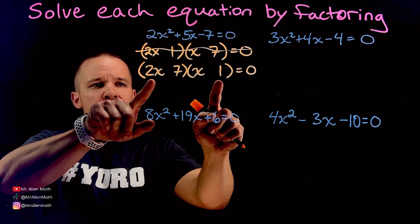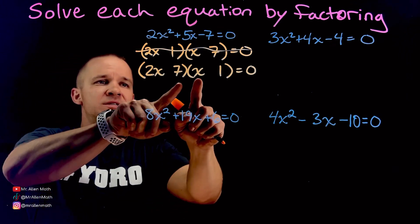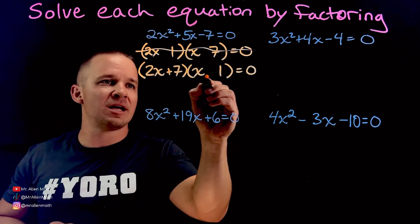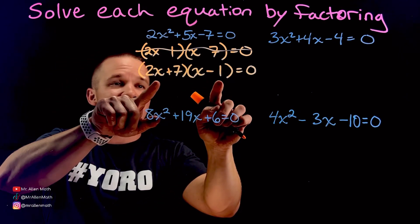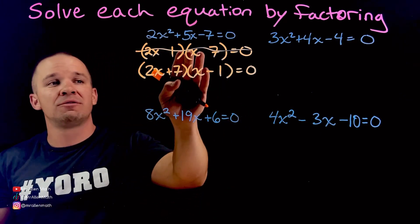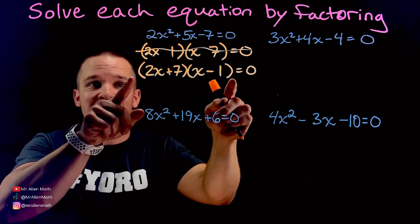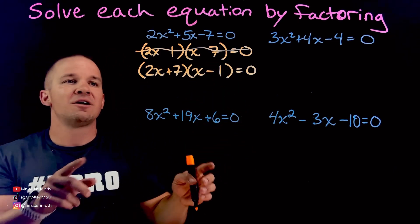But this time, let's throw the 7 here and the 1 here. I want to add to positive 5x. Well, here I'm going to get 2x. Here I'm going to get 7x. Which one of those should be positive? Which one should be negative? The 7x, we want to be positive. And the negative 2x then, because then I have 7x, negative 2x, that adds up to 5x. I just guessed and I checked.